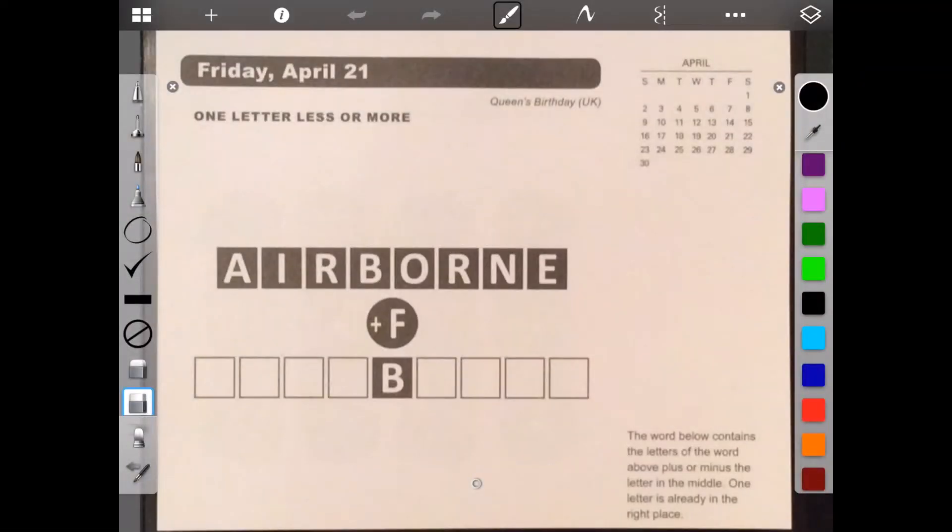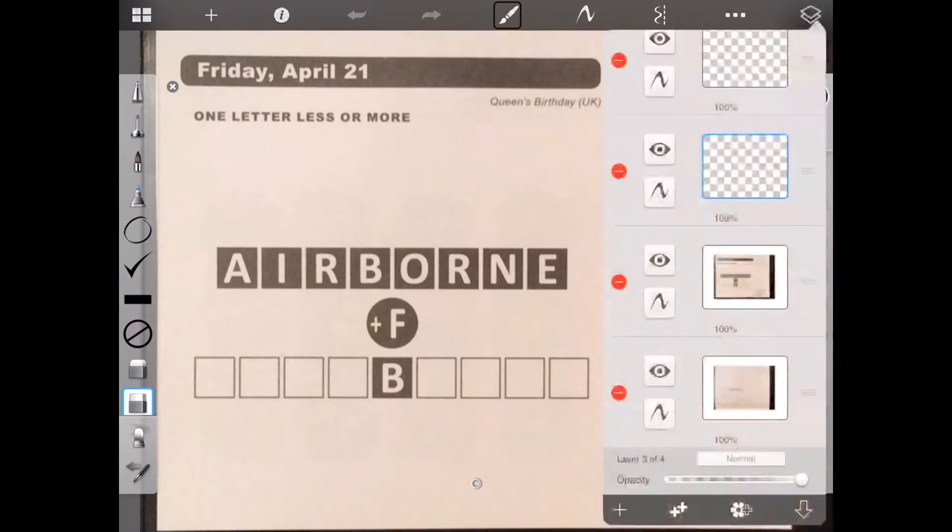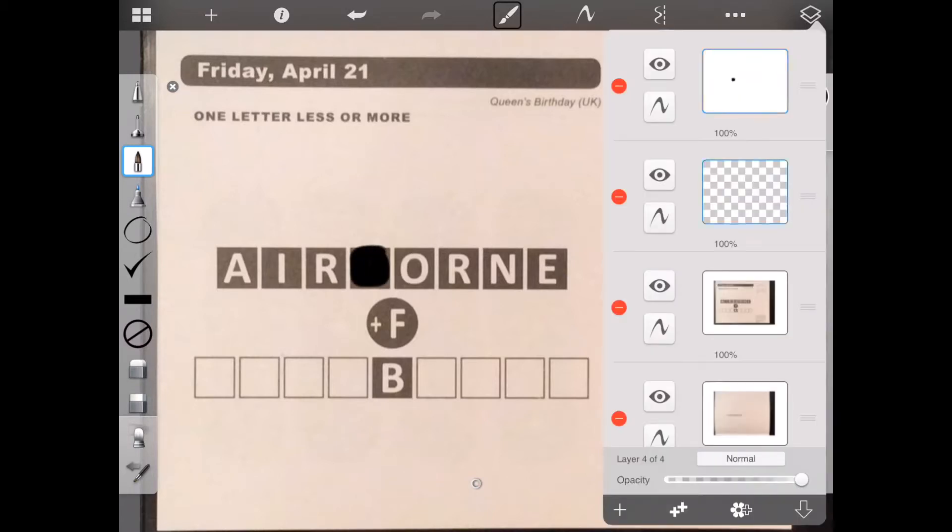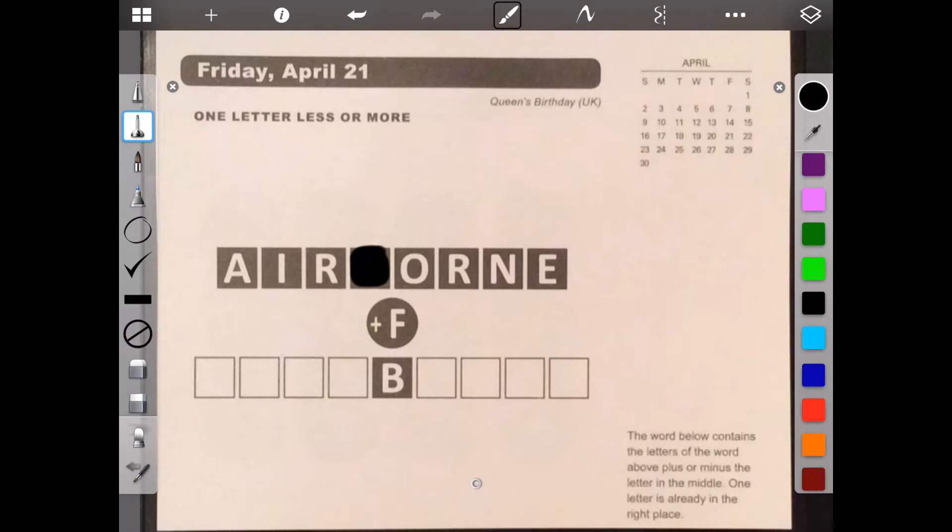Hello. Welcome to Brain Games Calendar 2017. We're in week 16, day 5. Let's begin. We have one letter less or more. The word below contains the letters of the word above, plus or minus the letter in the middle. One letter is already in the right place. Okay. So we're going to add an F, and the B is already taken care of. So I'm going to make sure I take that B out of contention so I don't use it as a thinking. I can use it, and I can't. And we have to add a B and add an F.